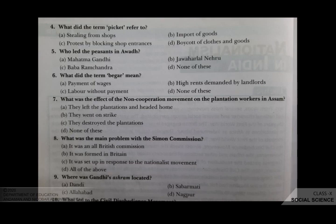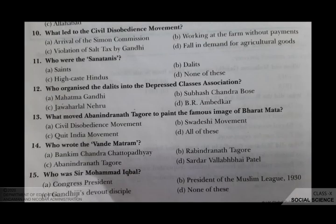What led to the civil disobedience movement? Your options are A arrival of the Simon Commission, B working at the farm without payments, C violation of salt tax by Gandhi, D fall in demand for agricultural goods. The correct answer is C, violation of salt tax by Gandhi.